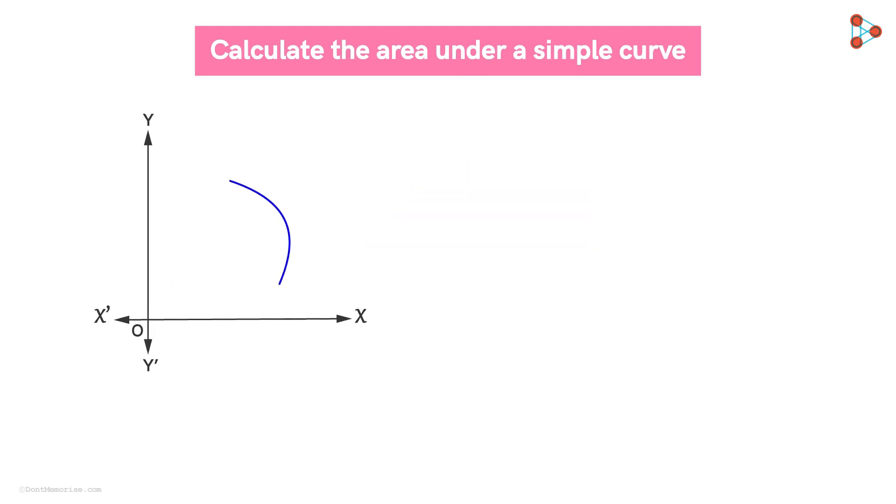Similarly, to find this area bounded by the curve X equal to G of Y, Y axis and the lines Y equal to C and Y equal to D, we will consider a horizontal strip as shown. Hence this area is equal to the integration from C to D, G of Y, DY.